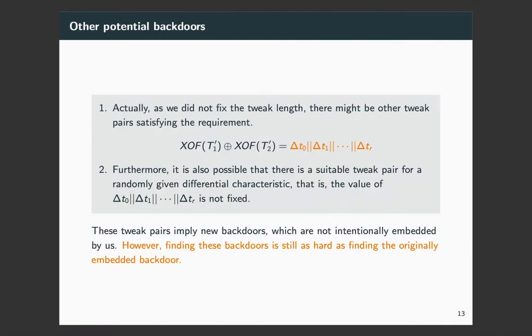Actually, there might exist other backdoors in the framework. Since we did not fix the tweak length, as long as the attacker can find a tweak pair whose output difference is the sub-tweak differences, he will discover a backdoor, even if this is not embedded intentionally. Moreover, it is also possible that there is a suitable tweak pair for a randomly given differential characteristic. That is, the sub-tweak differences can be any given value. All of these tweak pairs will imply new backdoors which are not intentionally embedded. However, finding these backdoors is still as hard as finding the originally embedded backdoor.